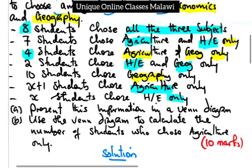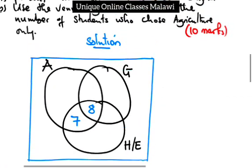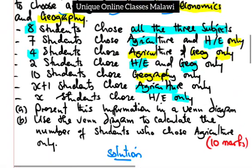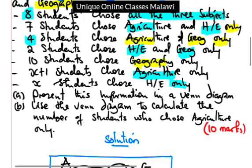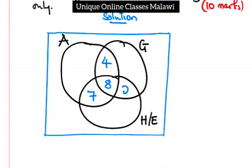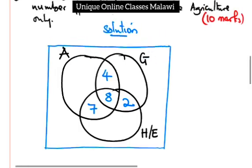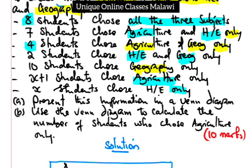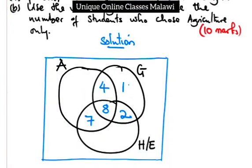Now, 4 students chose Agriculture and Geography only, so I put 4 here. 2 students chose Home Economics and Geography only, so we take 2. 10 students chose Geography only, so Geography only is 10.